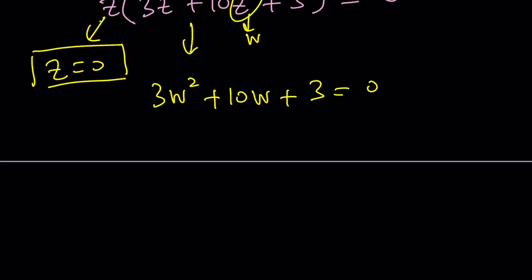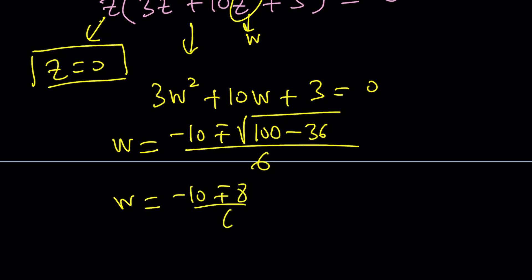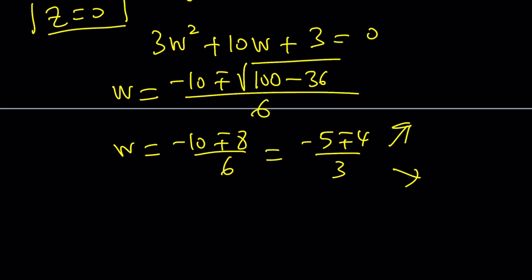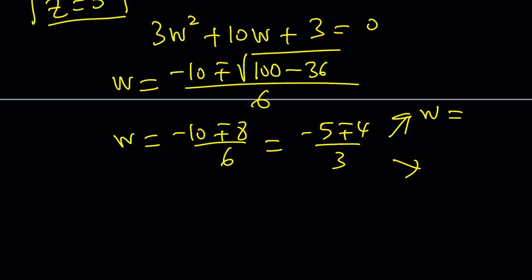3W squared plus 10W plus 3 equals zero. Now you can use the X method. I'll use the quadratic formula. Negative B plus minus the square root of B squared minus 4AC. That will be a 36. Their difference will be a 64. The square root of 64 is an 8. So this is going to give me negative 10 plus minus 8 divided by 6 which can be simplified as negative 5 plus minus 4 divided by 3.